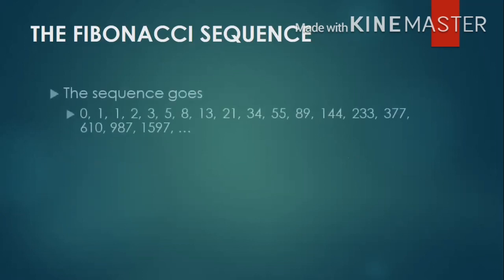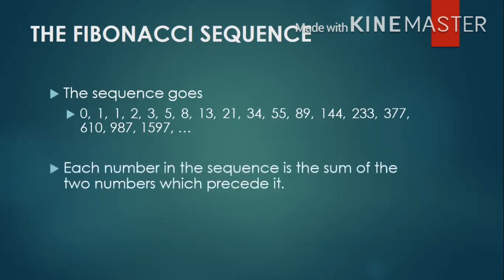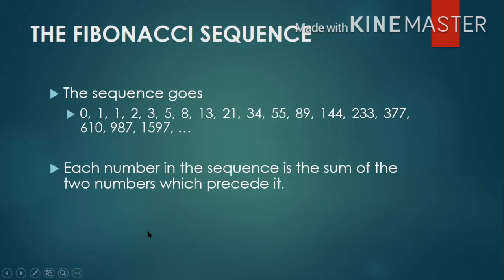The sequence goes like this: 0, 1, 1, 2, 3, 5, 8, 13, 21, and so on. What can you notice in the Fibonacci sequence? Each number in the sequence is the sum of the two numbers which precede it. We started from 0 and 1. To identify the next value, we add those two numbers: 0 plus 1 equals 1. Then 1 plus 1 equals 2, then 1 plus 2 equals 3, then 2 plus 3 equals 5, and so on. That is how the sequence goes.